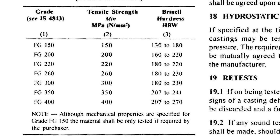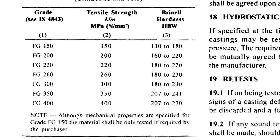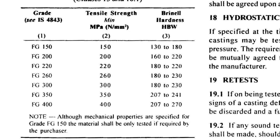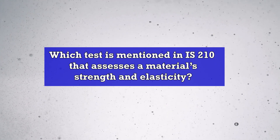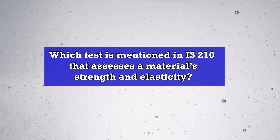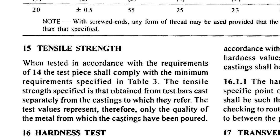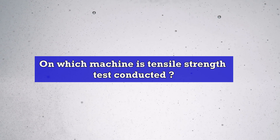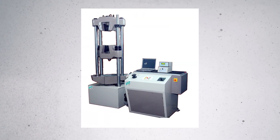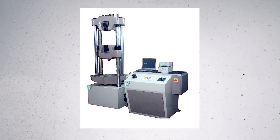The requirement of tensile strength for various grades is as per Table 1 of IS-210. Which test mentioned in IS-210 assesses a material's strength and elasticity? That's the tensile strength test mentioned in Clause 15 of IS-210. The tensile test is conducted on a Universal Testing Machine, UTM.